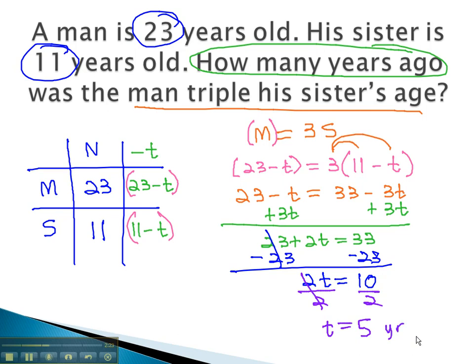In 5 years ago, the man was triple his sister's age. Let's try another example, where we see this relationship of either adding or subtracting an unknown time play out.